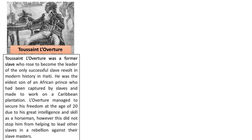First we have Toussaint L'Ouverture, who is mentioned in the first verse about Agard educating himself. Toussaint L'Ouverture is a former slave who rose to become leader of the only successful slave revolt in modern history, in Haiti. He's the eldest son of an African prince who had been captured and made to work on a Caribbean plantation. L'Ouverture managed to secure his freedom at the age of 20 due to his great intelligence and skill as a horseman. However, this did not stop him from helping to lead other slaves in rebellion against their slave masters. A fabulous military tactician — highly intelligent and sophisticated in his military strategy — he defeated the French in Haiti, and is an incredible person in the history of Caribbean freedom for the black peoples transported there.